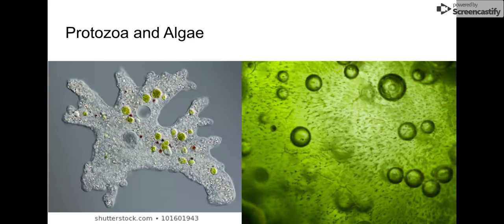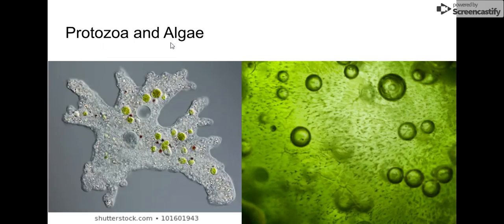Protozoa and algae are two types of protists. They are eukaryotic and have a nucleus — you can see a little nucleus inside of our amoeba right here, and there are some other smaller micro-nucleuses because amoebas are odd little creatures. Protozoa are going to be single-celled organisms that are similar to animals. Algae are single-celled organisms that are similar to plants. Both are of the kingdom protists and both are eukaryotic. Algae are going to be photosynthetic; protozoa are not.